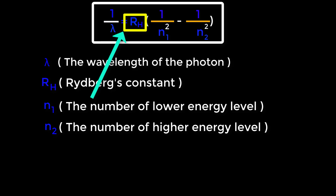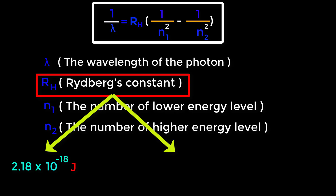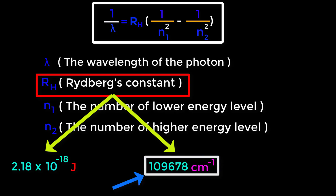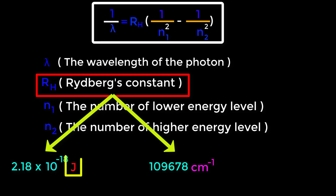Now focus on RH — Rydberg's constant. It has two values: one is 2.18 times 10 to the power negative 18 Joule, and the other is 109678 per centimeter. We can memorize this second value as 6, 7, 8, 9 and 10 per centimeter. The first value is in Joule units and the second is in per centimeter units.